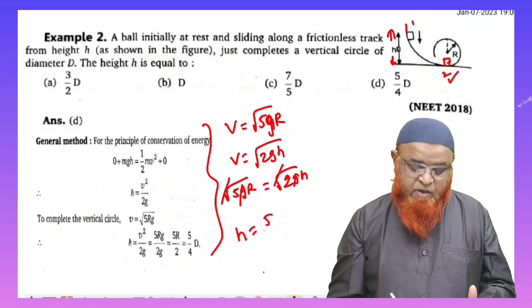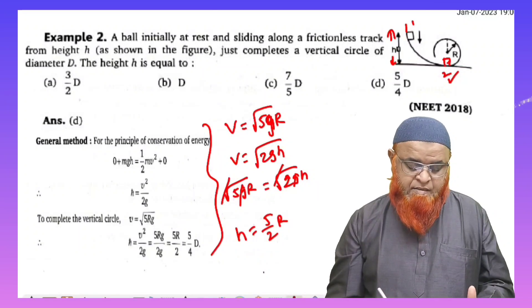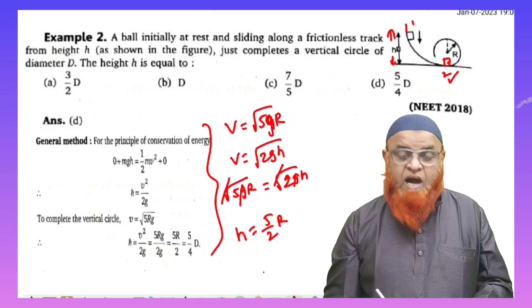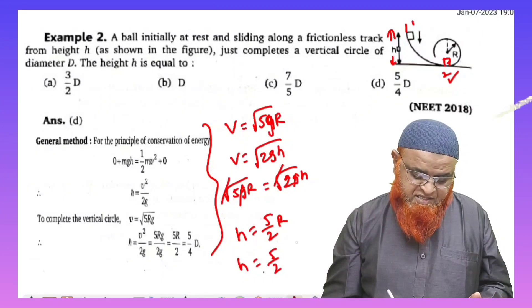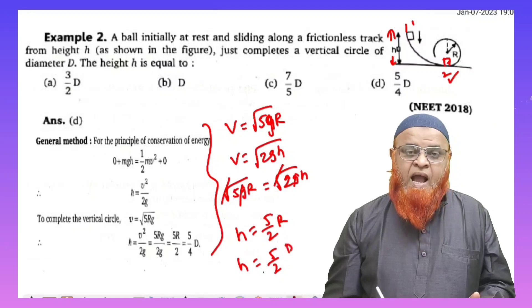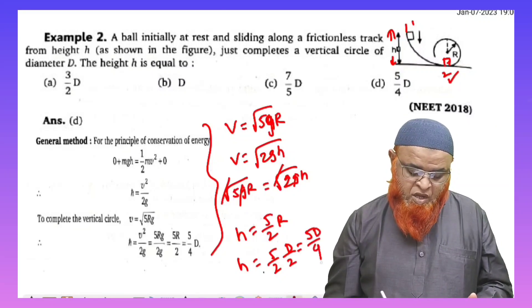Even g and g also. You can write here now h equals 5 by 2 r. But he is asking us to write the answer in terms of diameter. Then you can write here h is nothing but 5 by 2, and radius is nothing but half of the diameter, that is d by 2. So which can be taken as 5d by 4.